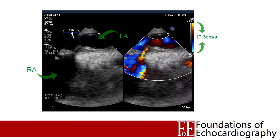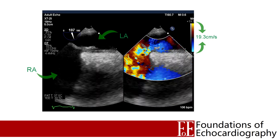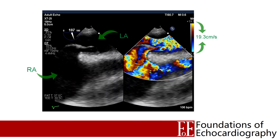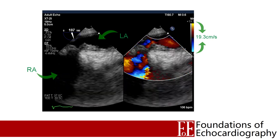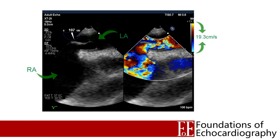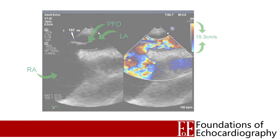In focused echo we rarely have to do this, but you should be aware that it is possible. One situation where I do this in comprehensive studies is to look for flow between the atria. Here we have a TOE image — a bicaval TOE view — where the left atrium is in the near field and the right atrium in the far field. Flow between the atria is often relatively slow compared to flow between other chambers of the heart, and so I've turned the scale down in order to better demonstrate this PFO. If you're using colour just for focused echocardiography you probably won't need to do this very often, but you should be aware that your machine will allow you to do it.